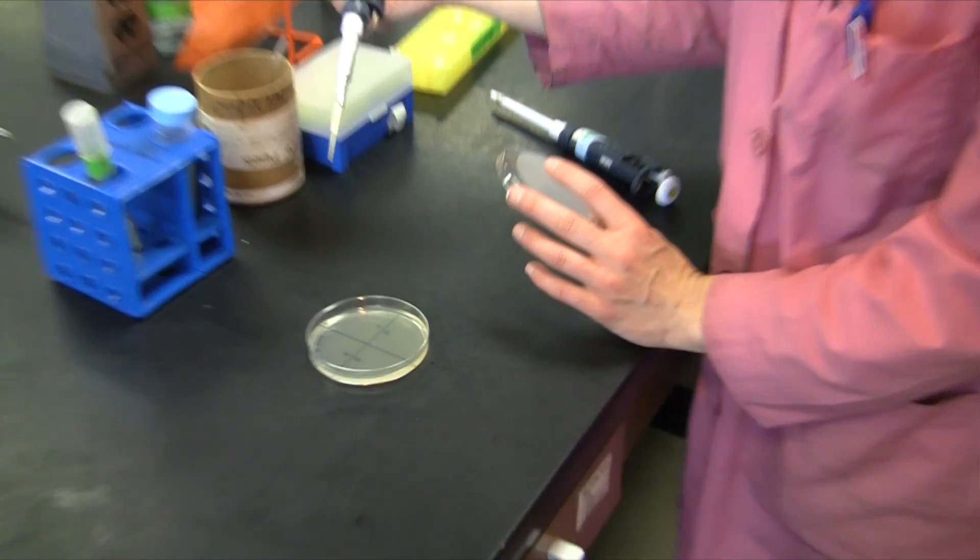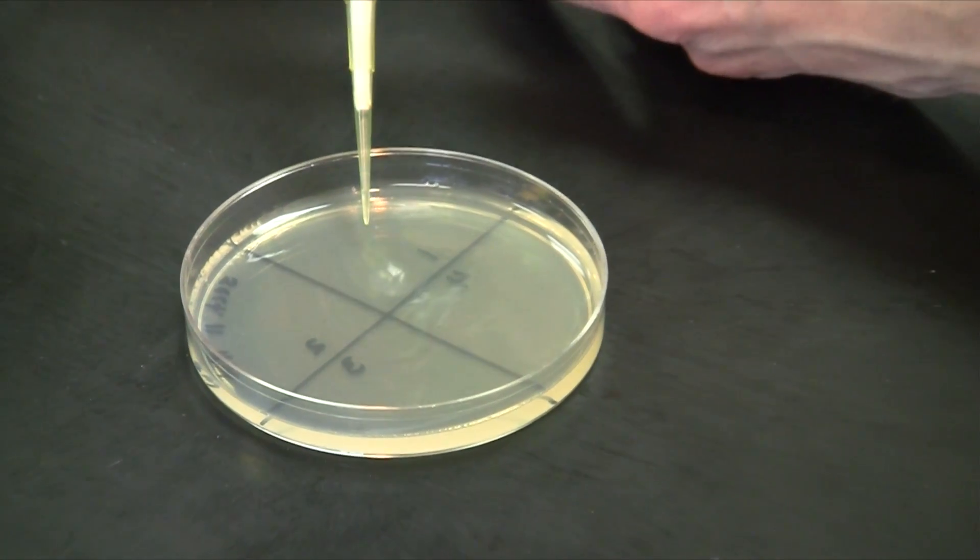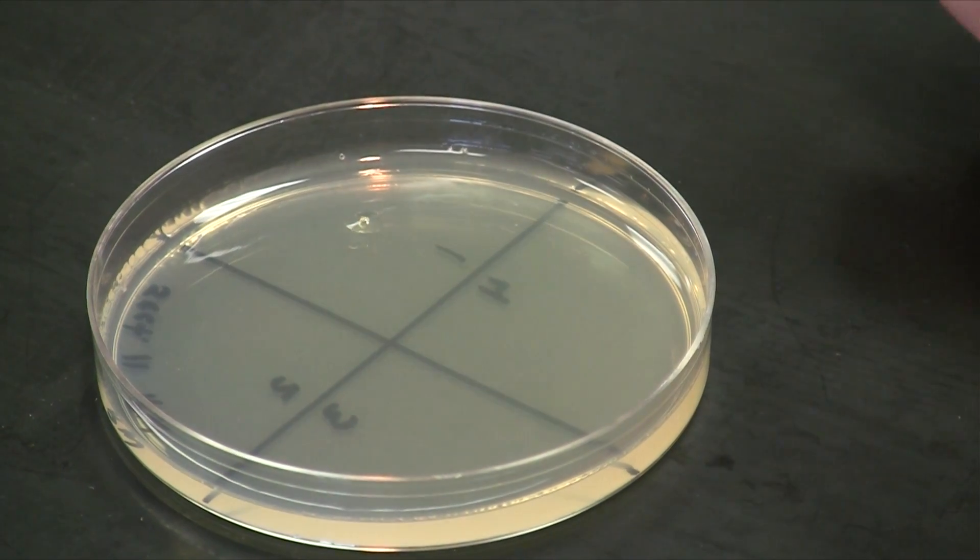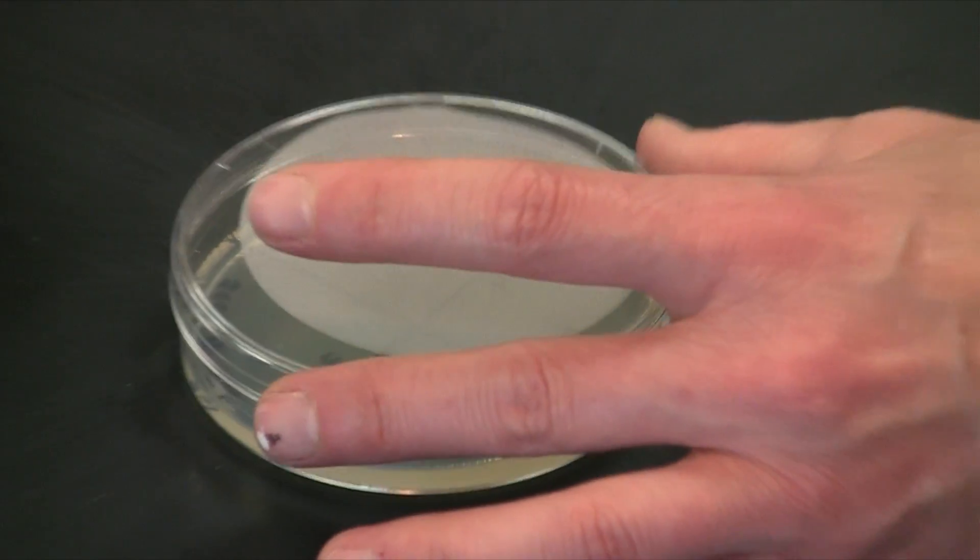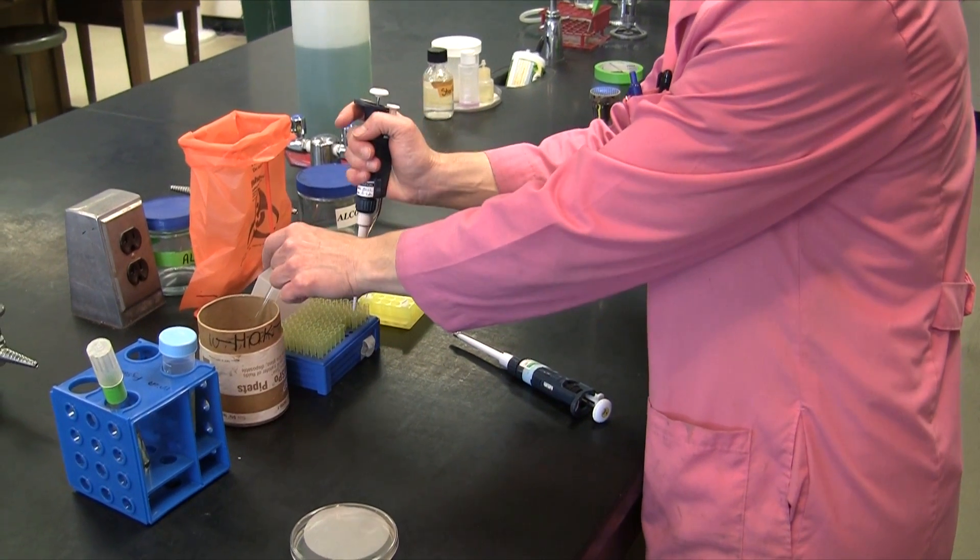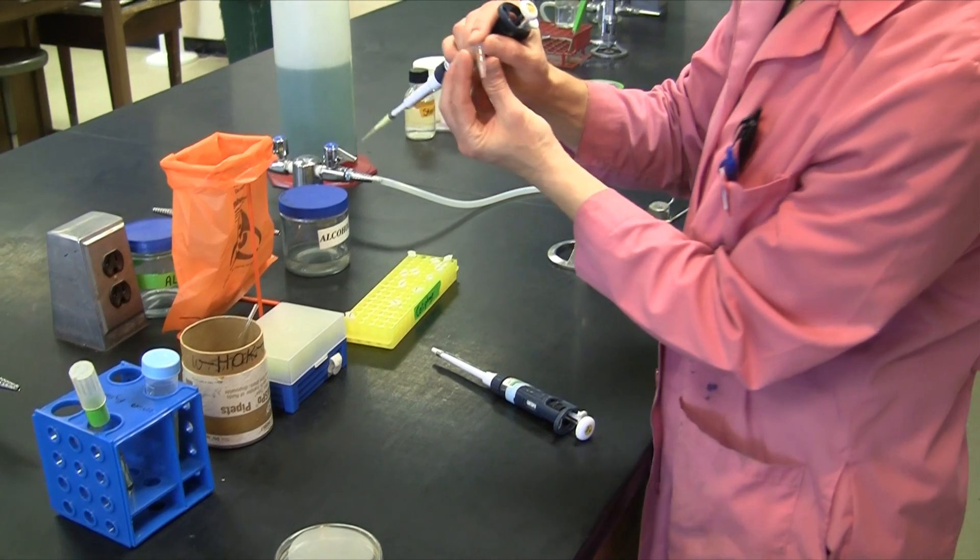We'll spot 5 microliters onto each one of three quadrants. We'll allow the liquid to absorb into the TSA plate, and we know that those are the regions where the viruses will attack the bacteria, leaving a region of lysis in the lawn of bacterial growth.